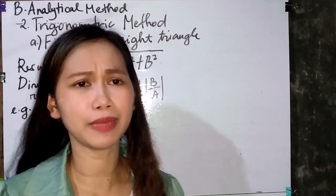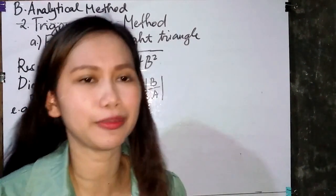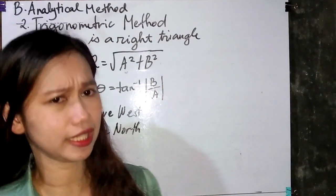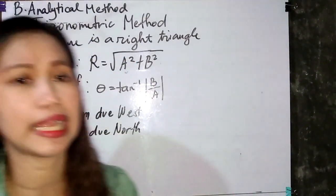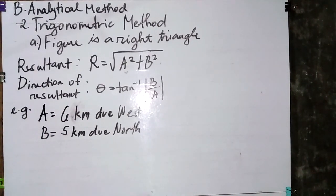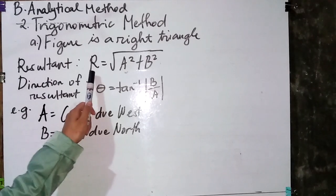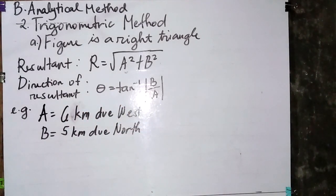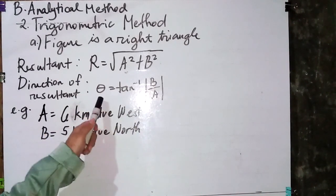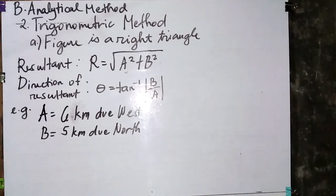The next method under analytical method is the trigonometric method. In here we will be dealing with the triangle. There are two methods: first is when the figure is a right triangle. The formula for the resultant is the square root of a squared plus b squared — the Pythagorean theorem. The direction of the resultant, theta, is equivalent to tan raised to negative 1 of b over a.